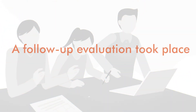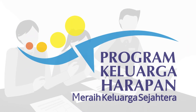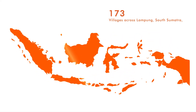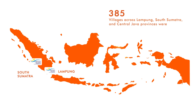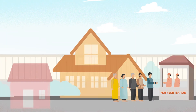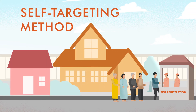A follow-up evaluation took place from 2010 to 2012 under Indonesia's Family Hope Program (PKH). Here, 400 villages across Lampung, South Sumatra, and Central Java provinces were randomly assigned to receive the PKH program either through automatic proxy means testing or through self-targeting, in which individuals are invited to apply for an assistance program. Across the two studies, researchers compared the three targeting methods.